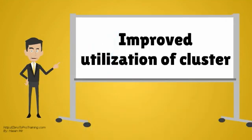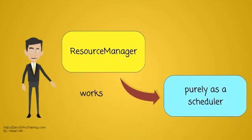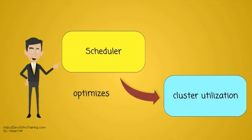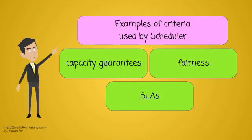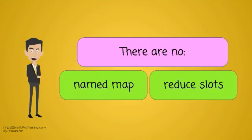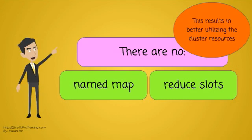Improved Utilization of Cluster. The Resource Manager works purely as a scheduler. The scheduler optimizes cluster utilization based on certain criteria. Examples of criteria are Capacity Guarantees, Fairness, and SLAs. In the YARN-based version of Hadoop, there are no named map and reduce slots. This results in better utilizing the cluster resources.